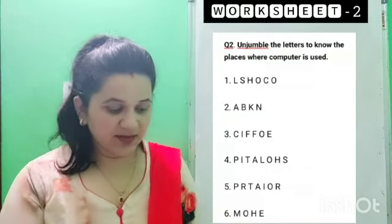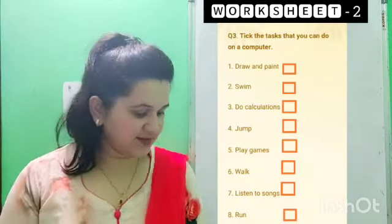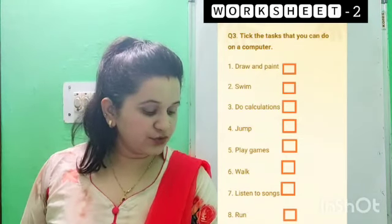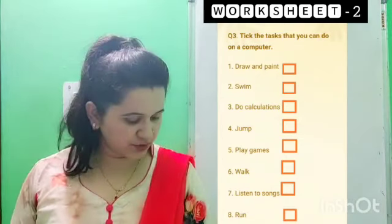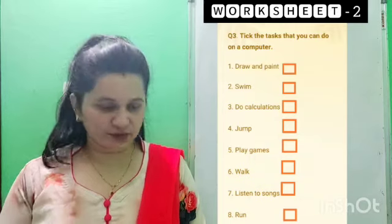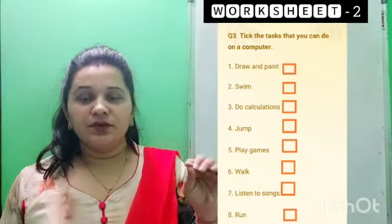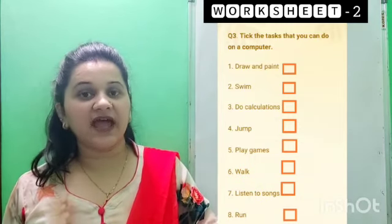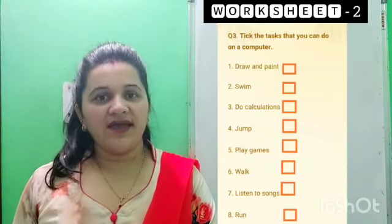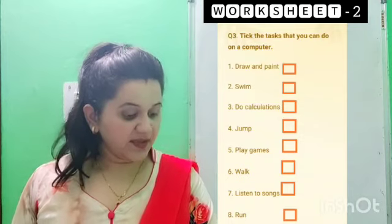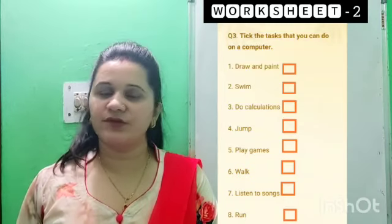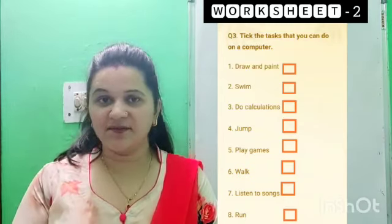Now come to the third question. Our third question is: tick the tasks that you can do on a computer. Here I am giving you the tasks written. What you have to do is tick on that particular task that you can do on a computer. The first one is draw and paint. If you can do this task on a computer, put a tick mark; if you cannot, put a cross mark. Think before doing this.